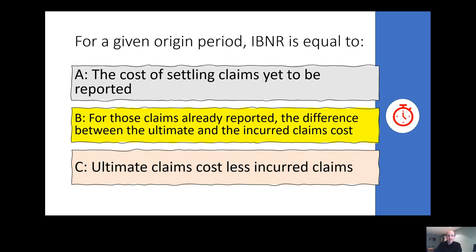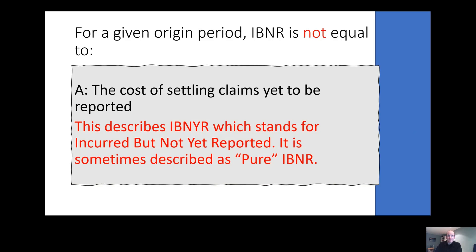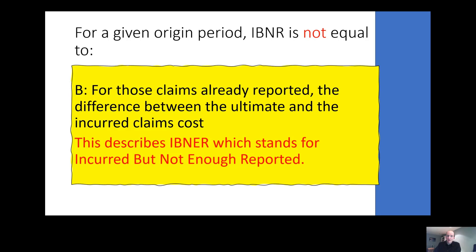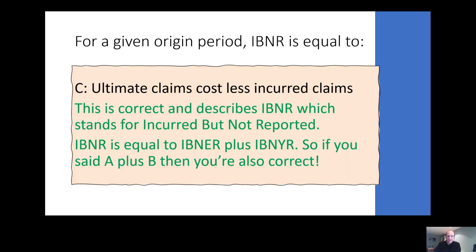So which option did you pick? If you picked A then you've gone for IBNYR — incurred but not yet reported, sometimes known as pure IBNR. If you picked B then you've gone for IBNER — incurred but not enough reported. The correct answer was C, which describes IBNR, or to give it in full, incurred but not reported. Note that this is equal to IBNYR plus IBNER, so if you said A plus B then you also got it right.